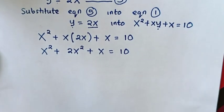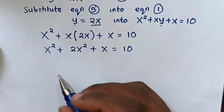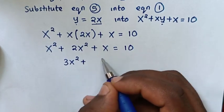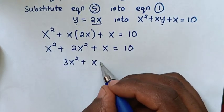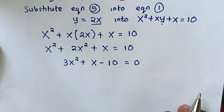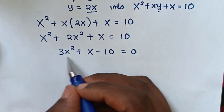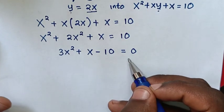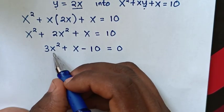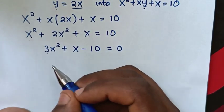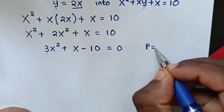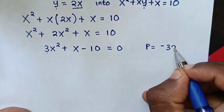Then our equation will be 3x squared plus x minus 10 is equal to 0. Now this equation is a quadratic equation, so we solve by factorization, whereas the product is: coefficient of x squared is 3 times constant is negative 10. So product is equal to negative 30.